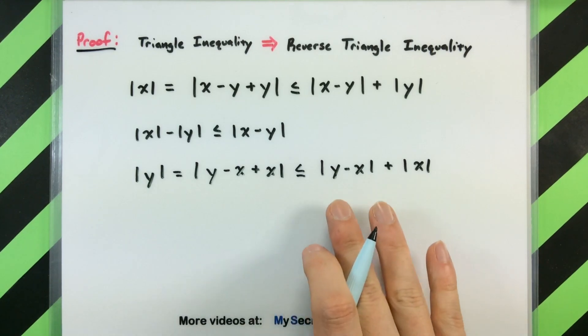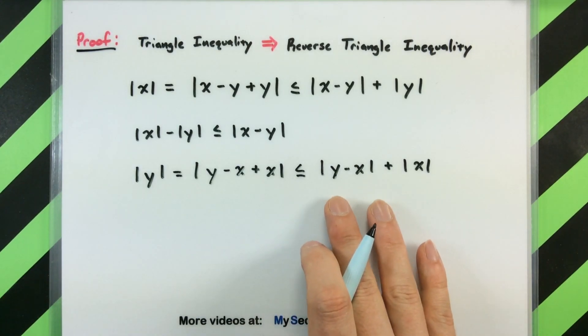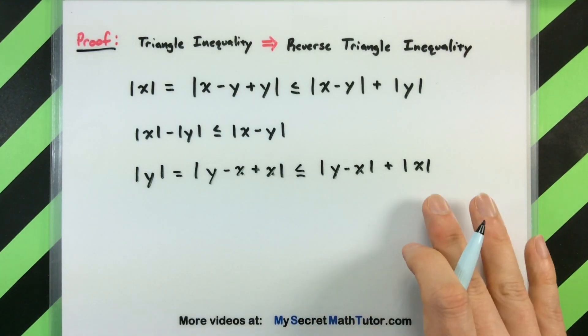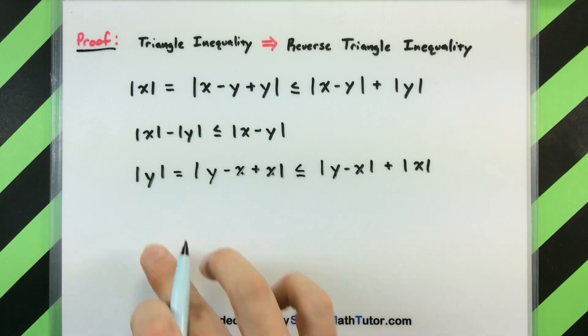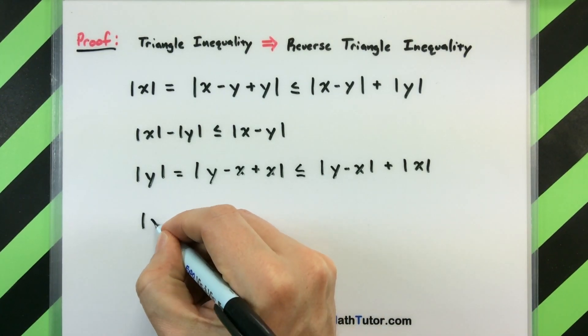So now we see there's that absolute value of y minus x quantity. We don't want this x on this side, so we'll move it over to the left like we did last time.